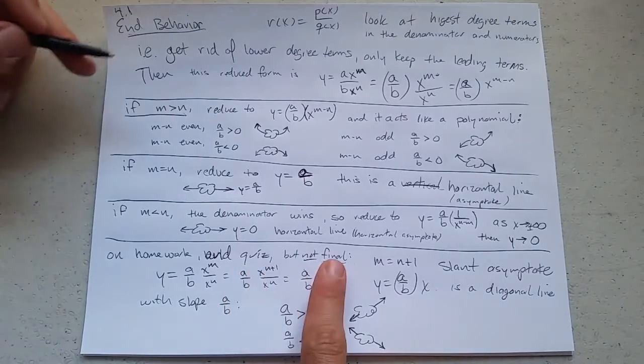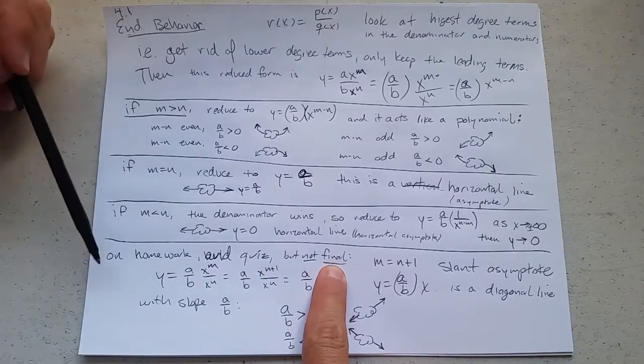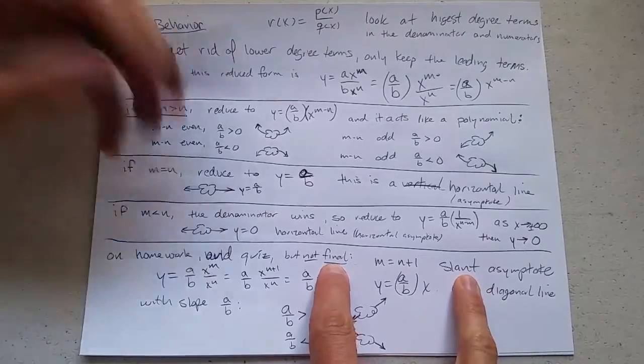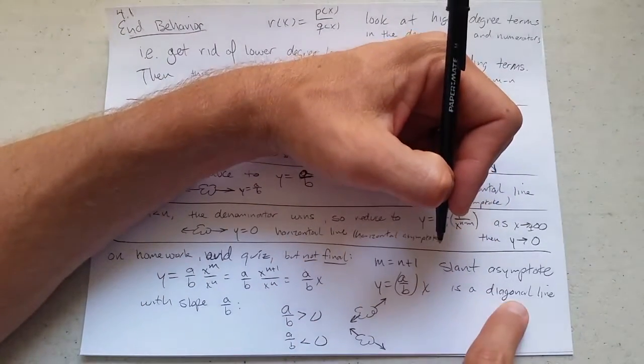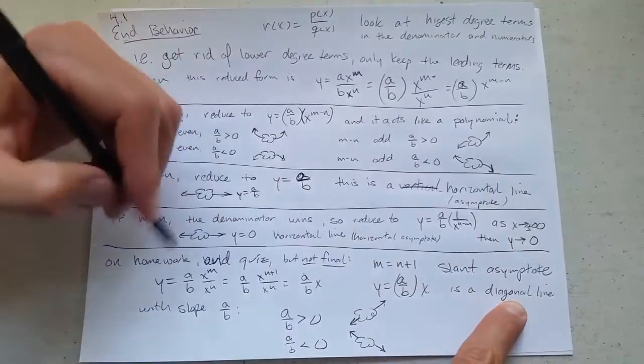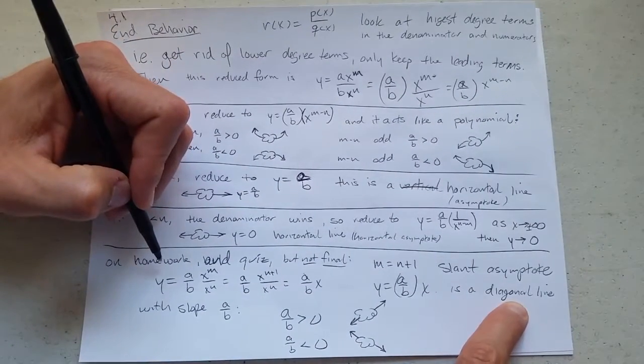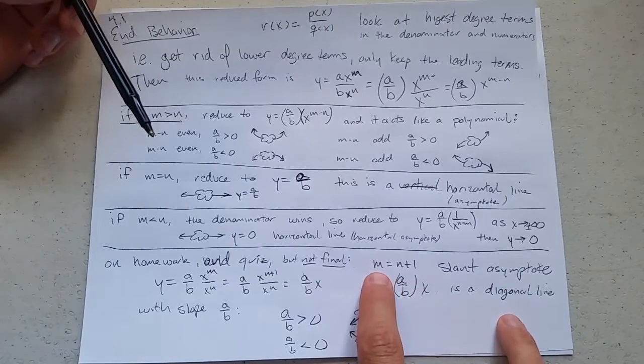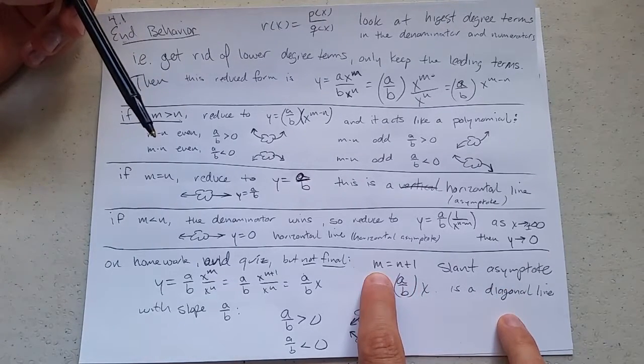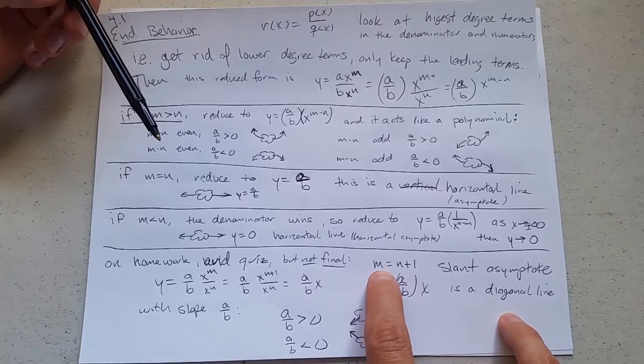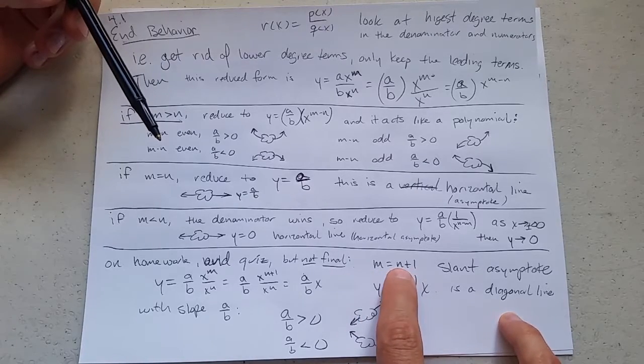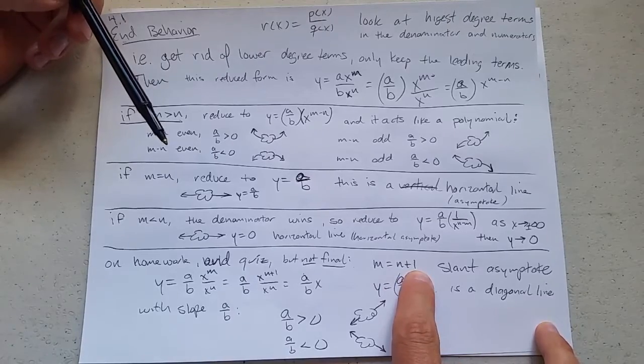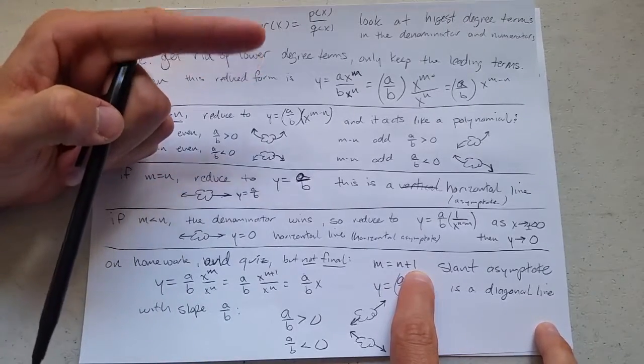Now I will not do this on the final, but some of the homework problems and the quiz problems may talk about slant asymptotes also known as diagonal asymptote. What happens, what leads to a diagonal or a slant asymptote? Your numerator wins, but it only wins by one. So if m is bigger, but it is equal to n plus one, so it's one more than n. So numerator won, but only won by one degree.